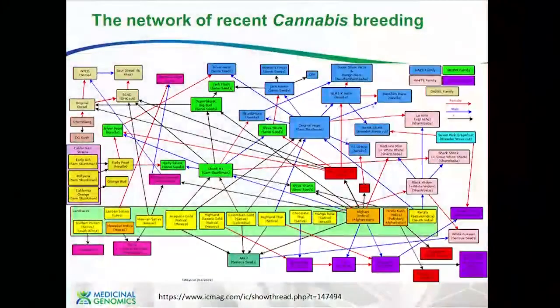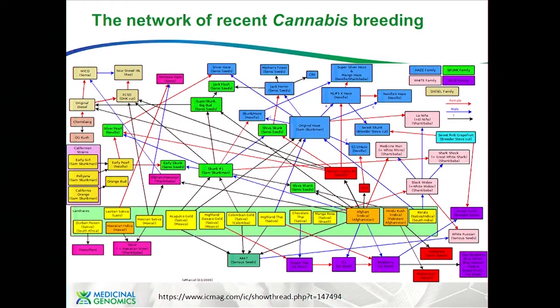I pulled this off of icmag.com a few days ago. Cannabis has a very convoluted history. People have been doing this in their basements for decades — prohibition-era breeding, moving these things around the world in very small batches. There's also the issue on the production side where you typically do not want a lot of pollen in your facility, so we've had a bottleneck in terms of male genetics. This schematic was put together through somebody's recollection, so I don't know how accurate it might be, but it really looks more like a web than a bifurcating tree.